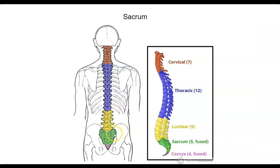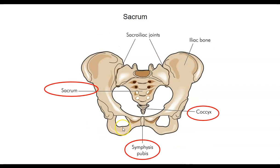The sacrum is five fused vertebrae, located down here, and the coccyx is four fused vertebrae. The sacrum articulates with the pelvic bone. And then in between the two pelvic bones is the pubic symphysis, which, just like the intervertebral disc, is made of fibrocartilage.